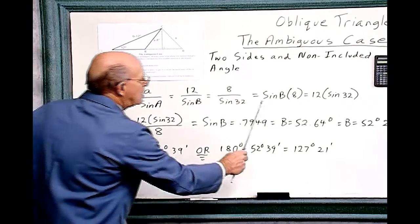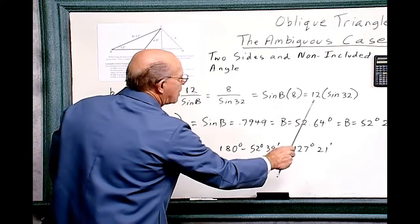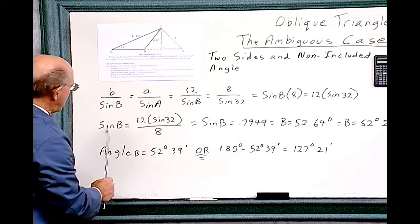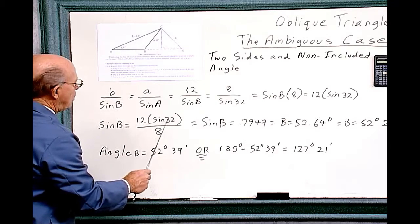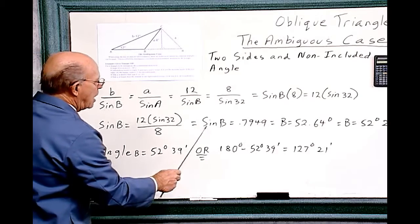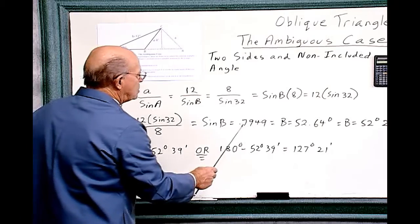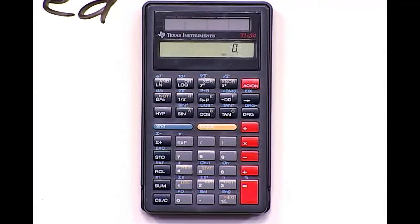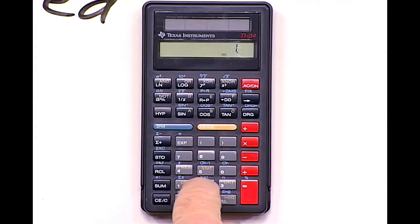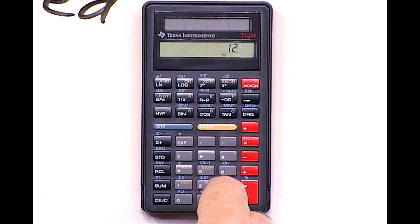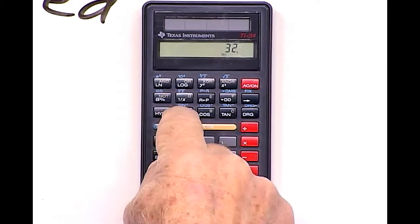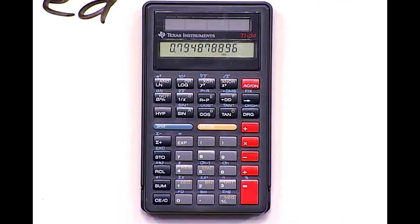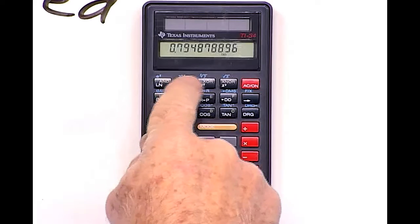Dividing each side by 8, we get sine B equals 12 times sine 32 divided by 8. And sine B equals 0.7949. Let's do this on a calculator and work out the problem. Sine B equals 12 times sine of 32 divided by 8 equals 0.7949.